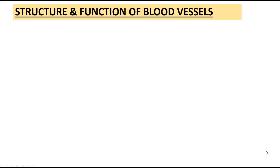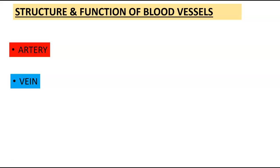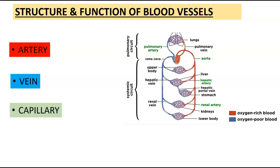Today we will talk about the structure and function of the blood vessels. When we talk about the human body there are three main blood vessels you need to focus on: arteries, veins, and capillaries. In order to better understand this we need a picture of the pulmonary and systemic circulation.